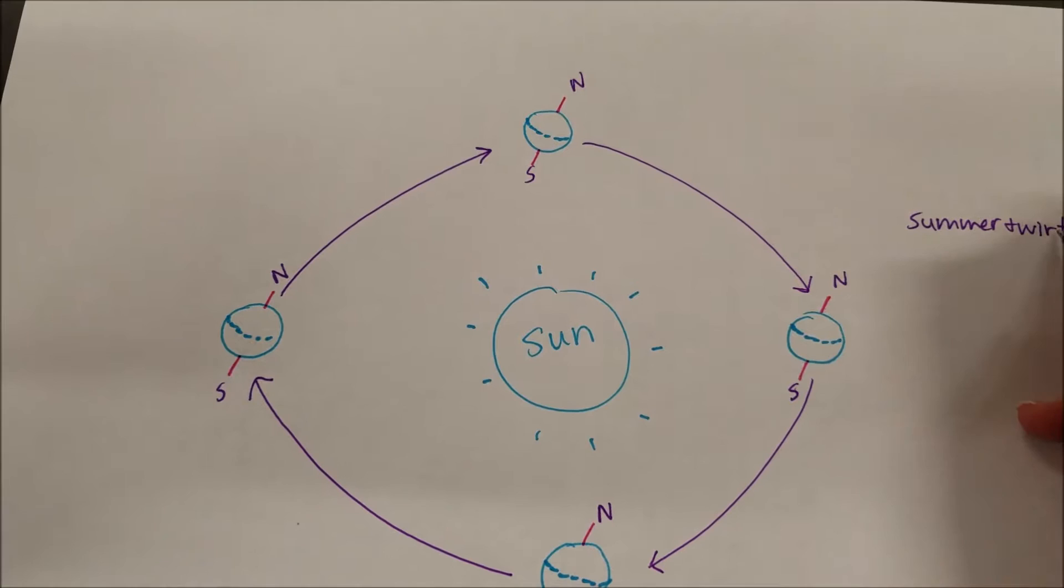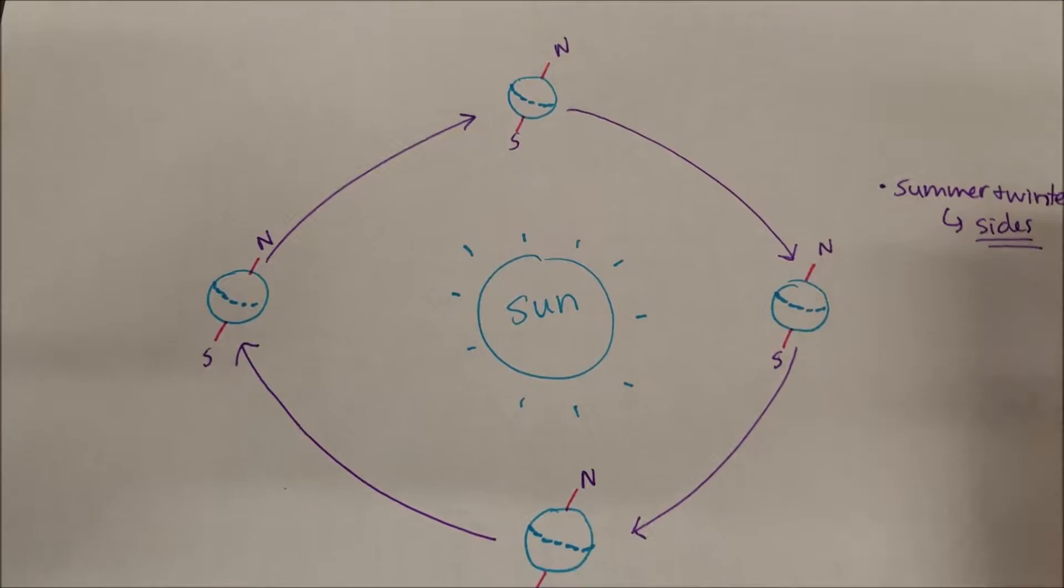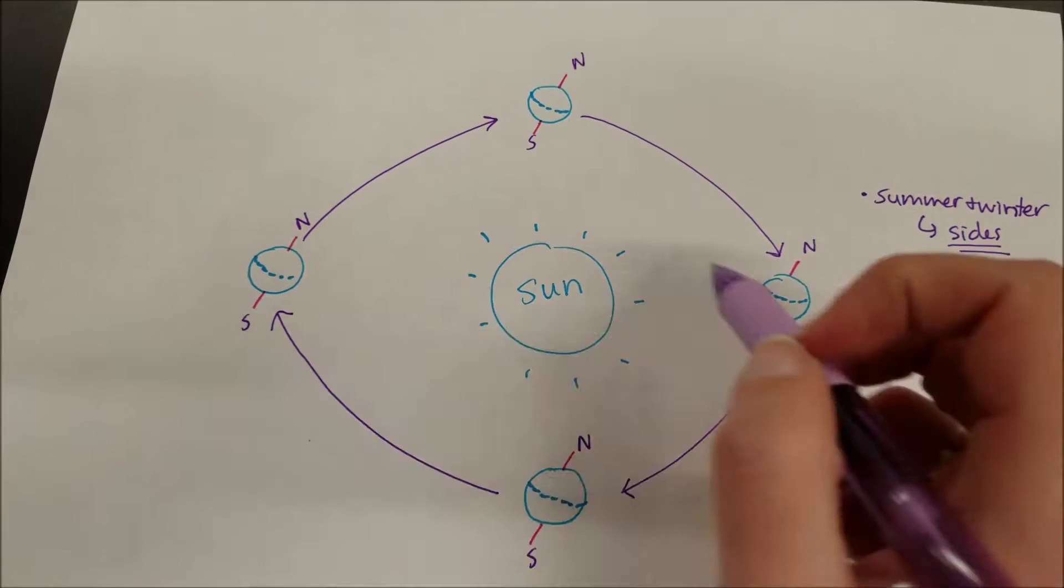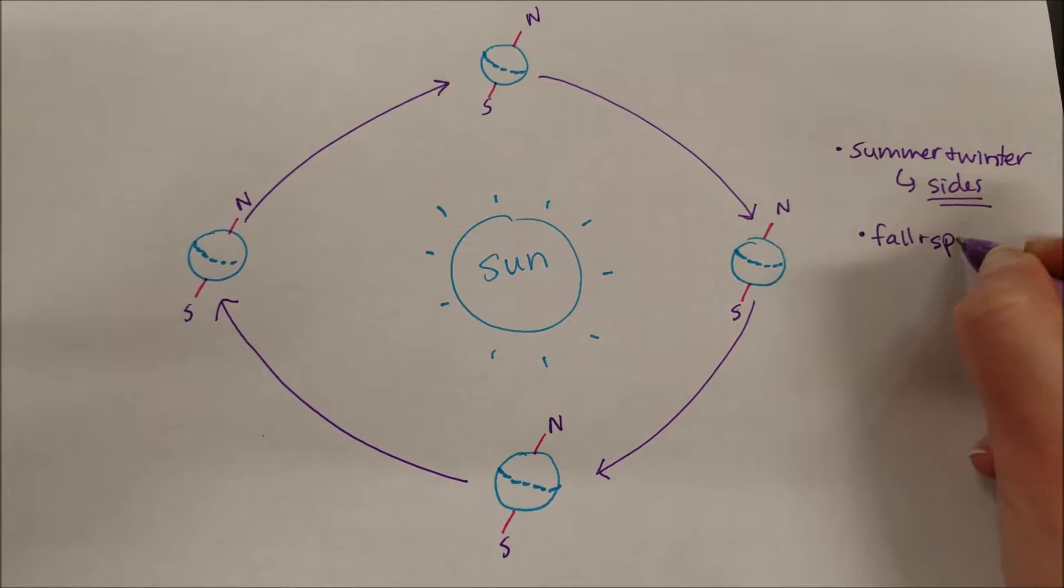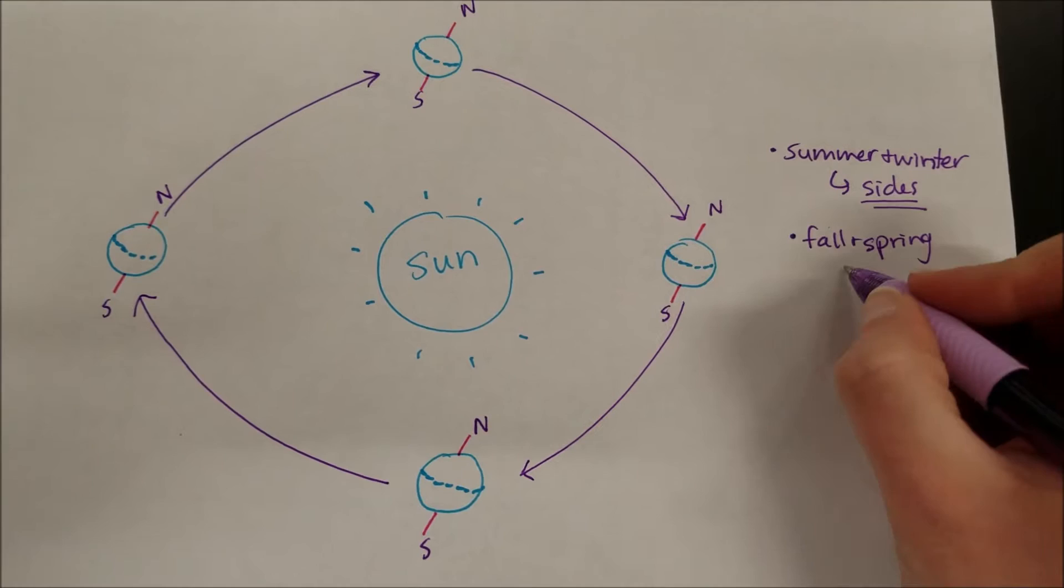Summer and winter will always be located on the sides of the diagram. This means you can only locate fall and spring after you figure out where winter and summer are by following the arrows. You have to get summer and winter first, then follow the arrows.